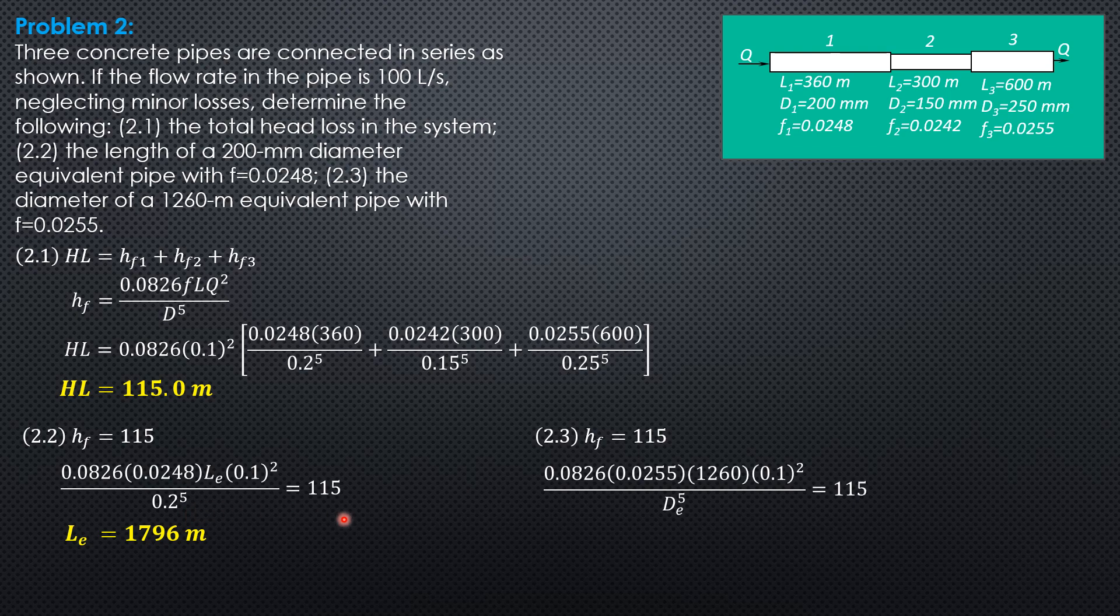So the equivalent diameter is this value here, divide by 115, then raise to one-fifth, you'll get 0.1873 meter or in mm, 187.3 millimeters.